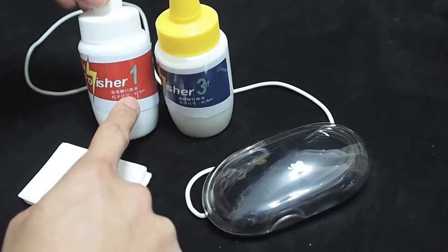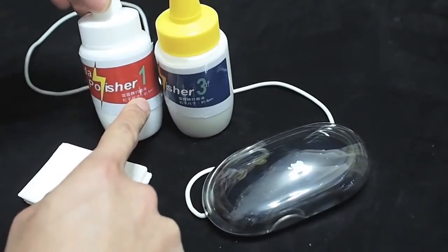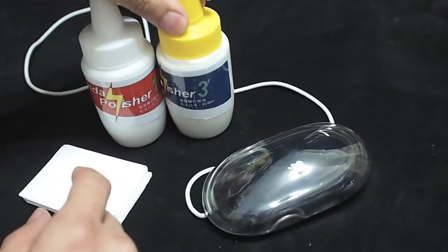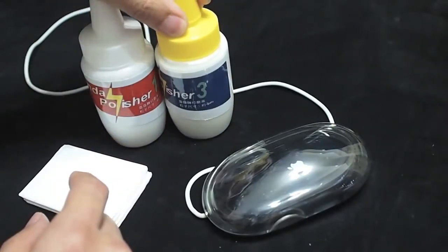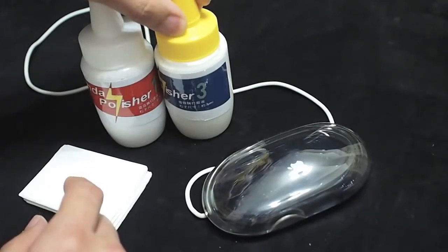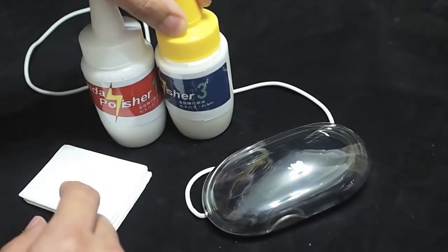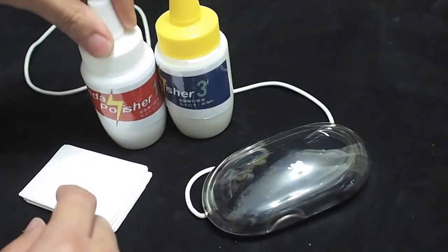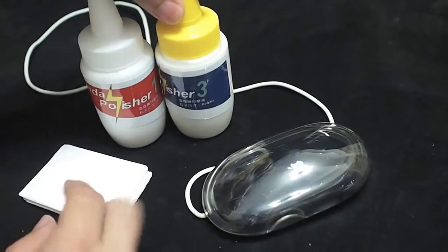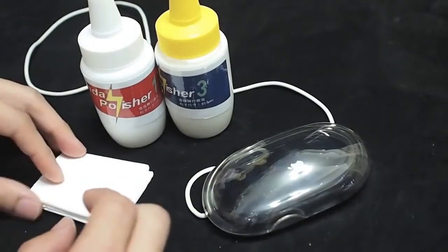This is number 1, and the particle size is 1 micrometer. The number 3 plastic polisher is to remove serious scratches. And after we have removed serious scratches, we can apply number 1. Let me show you how to use this kind of plastic polisher.